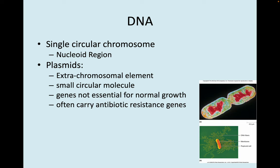The DNA is a single circular chromosome located in the nucleoid region. There is no membrane in a prokaryotic cell nucleus, so we call it a nucleoid. It also contains plasmids — extra-chromosomal elements that are small circular molecules. These are genes not essential for normal growth, but they often carry antibiotic resistance genes.